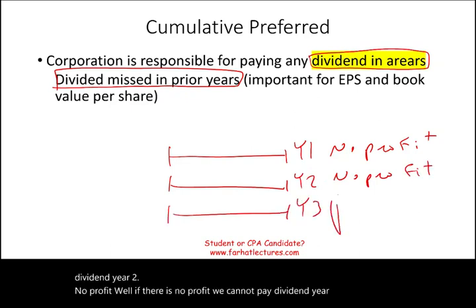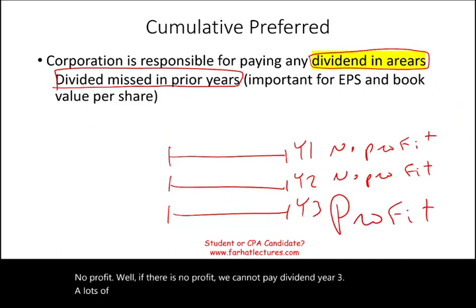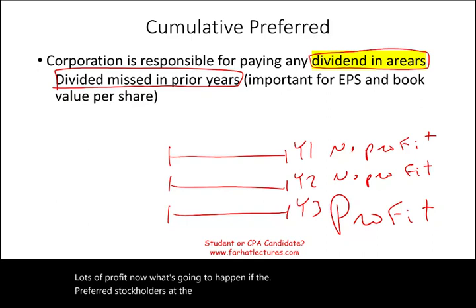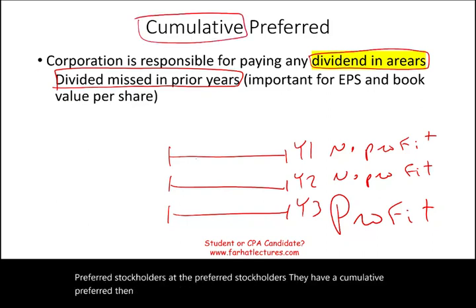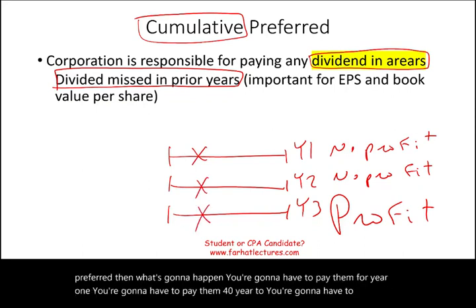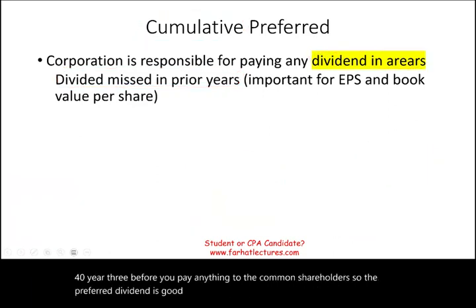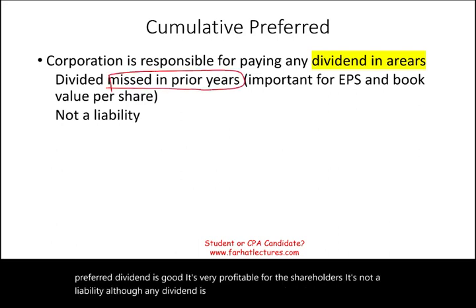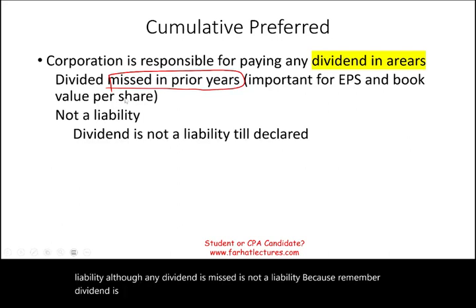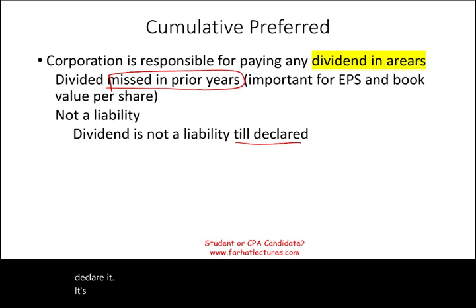In year three, if there's lots of profit, and the preferred stockholders have cumulative preferred, the company must pay them for year one, year two, and year three before paying anything to common shareholders. It's not a liability — dividends are not a liability until declared. If the board of directors doesn't have the profit, they won't declare it.